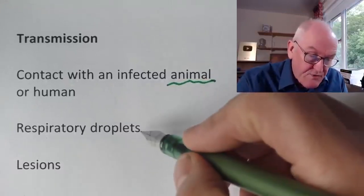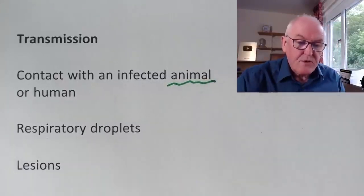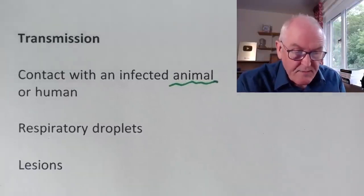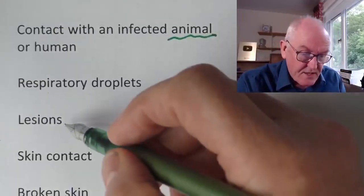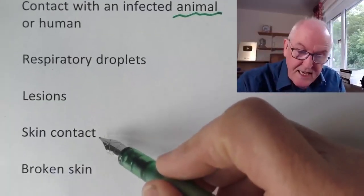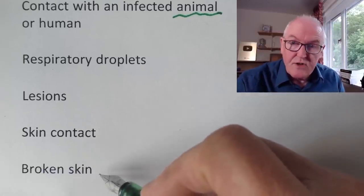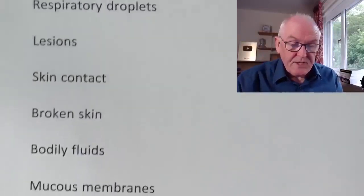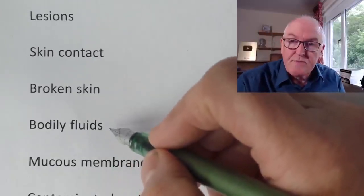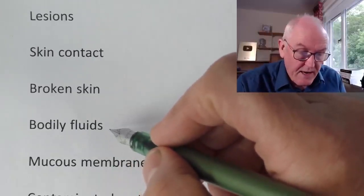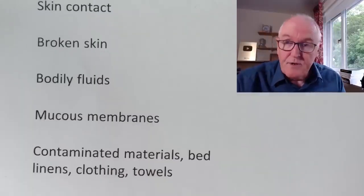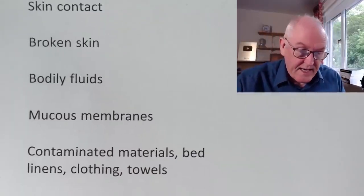It's spread in respiratory droplets, so you can breathe it in through other people's exhaled air. It can be transmitted from the lesions — that means the spots. It can also be transmitted by close, direct skin-to-skin contact, especially if there's some broken skin. It can also be transmitted in body fluids, and some of the transmission at the moment is occurring in the male homosexual community, as the mucous membranes component indicates.